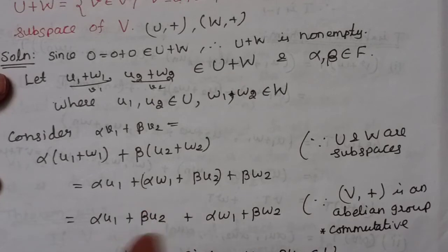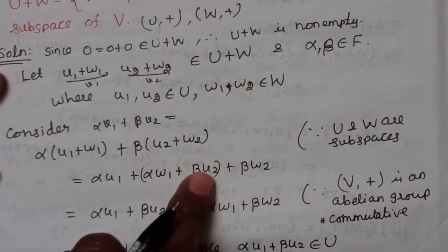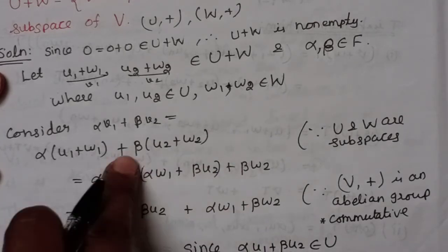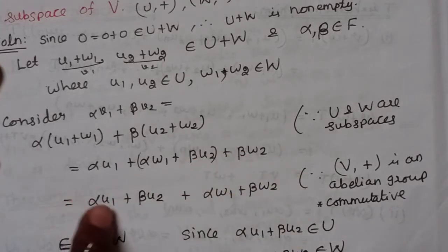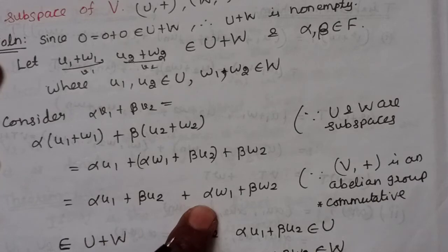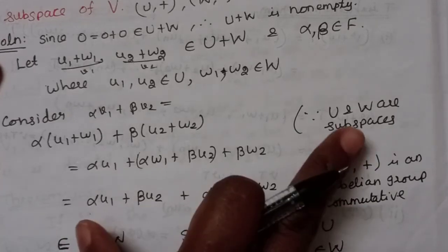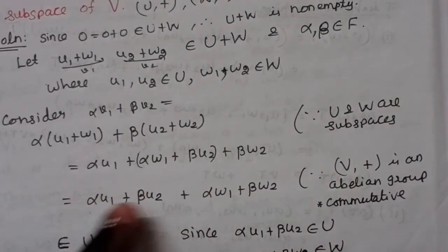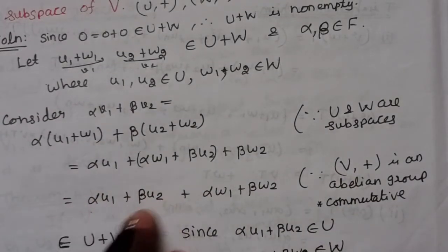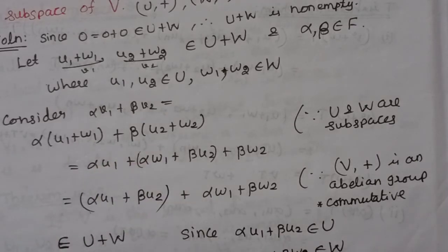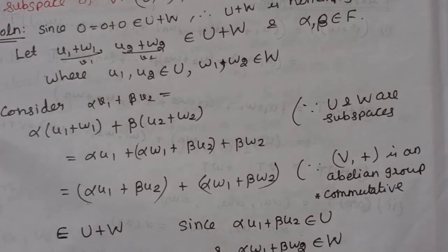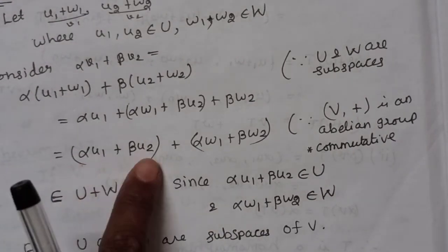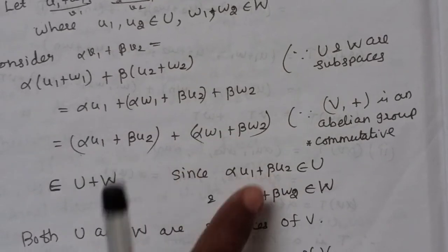Using the abelian group property (a plus b equals b plus a), we rearrange to get (alpha·u1 plus beta·u2) plus (alpha·w1 plus beta·w2). Since U and W are subspaces, alpha·u1 plus beta·u2 belongs to U, and alpha·w1 plus beta·w2 belongs to W. So this element belongs to U plus W.